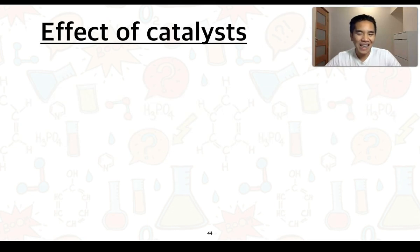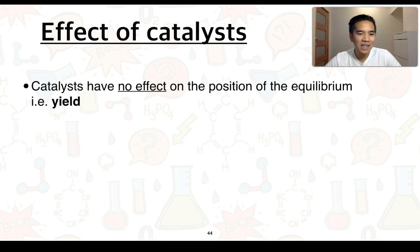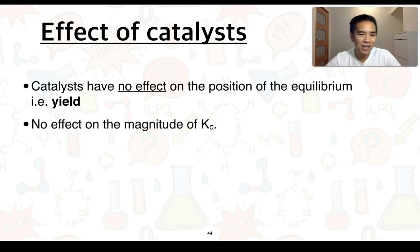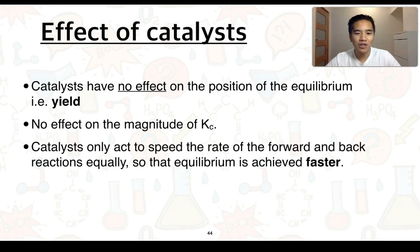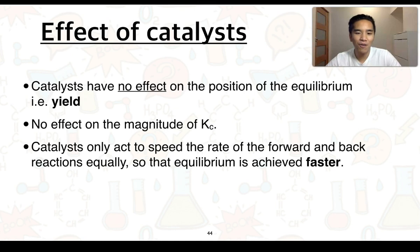One more final thing that isn't covered in the science understanding are catalysts. We want to consider what effect they may have on a system in equilibrium. Long story short, catalysts have no effect on the position of the equilibrium — i.e., the yield. That's because catalysts only act to speed the rate of the forward and back reactions equally so that equilibrium is achieved faster. So it doesn't actually affect the concentrations or amounts of reactants and products — it just changes how quickly equilibrium is reached.